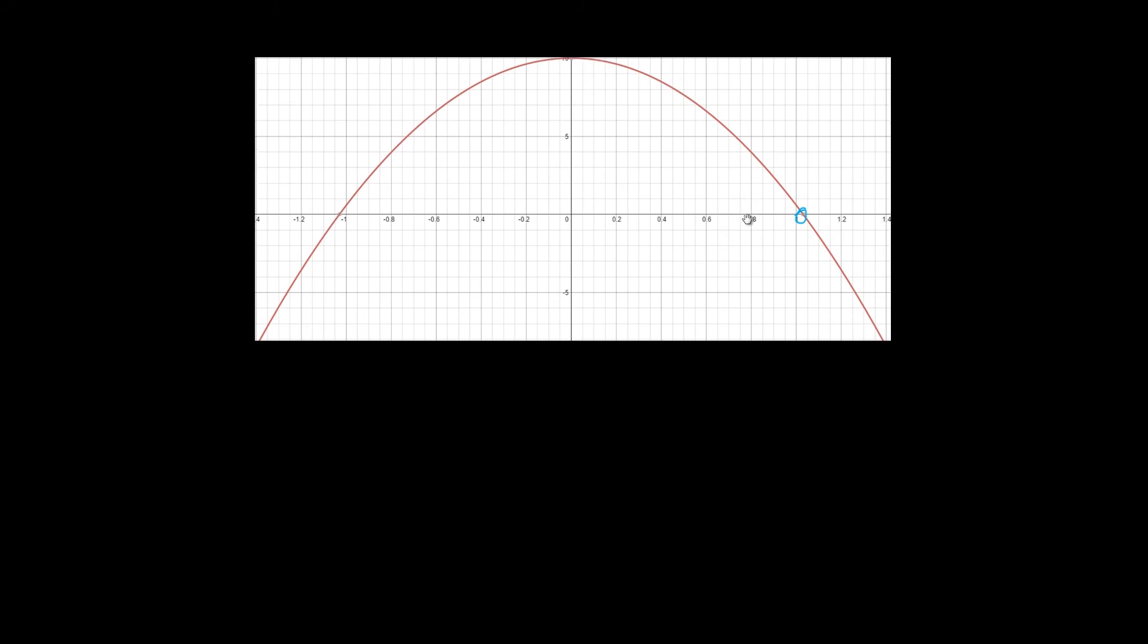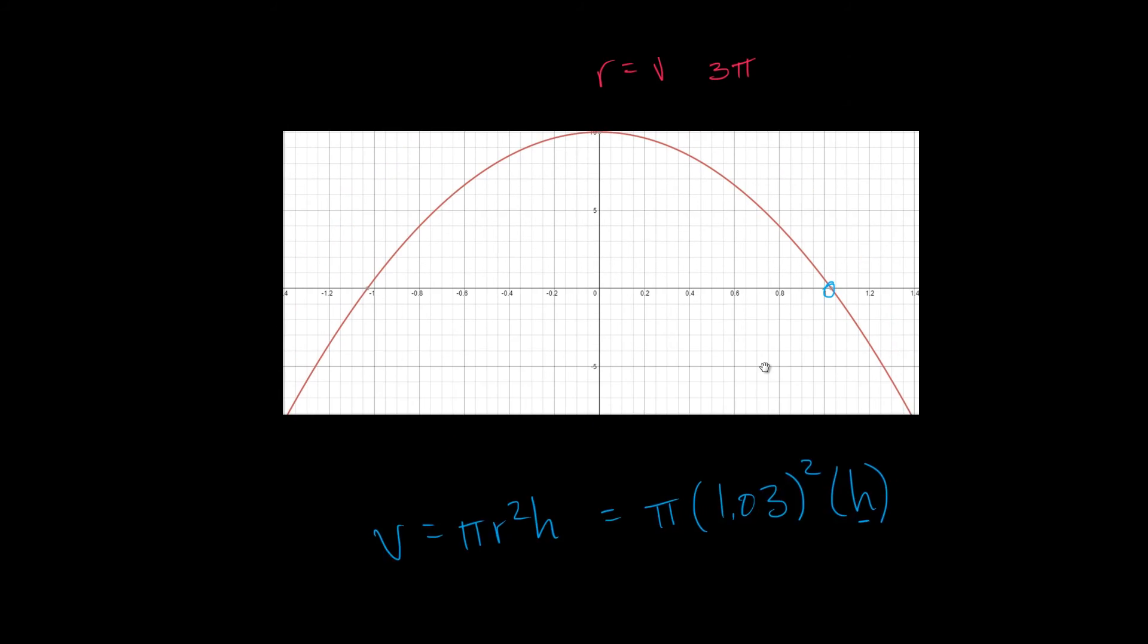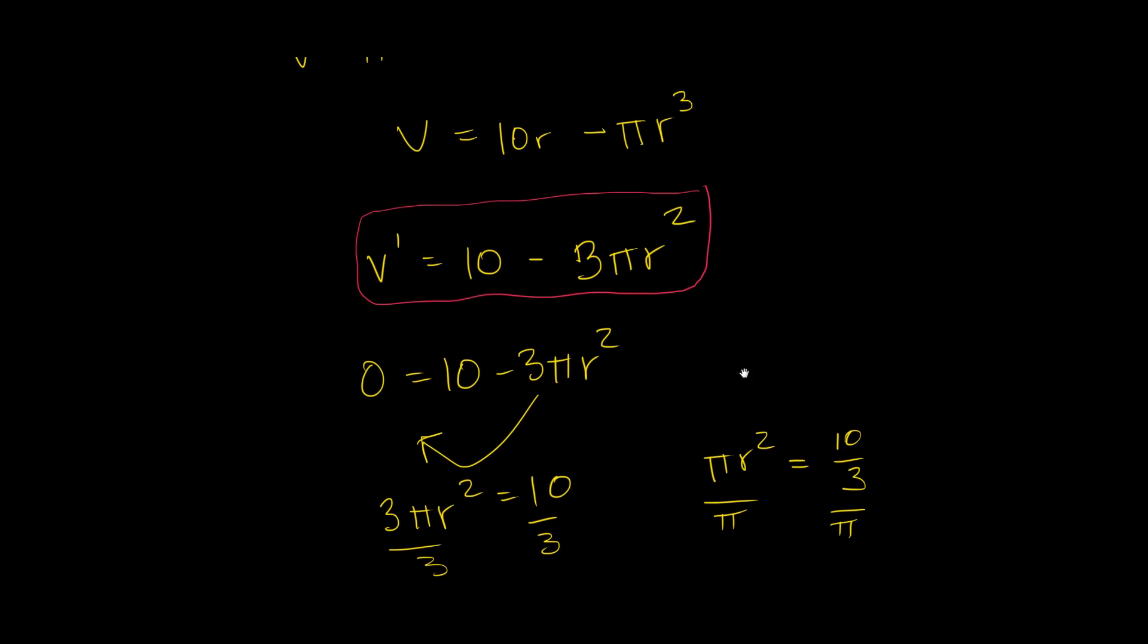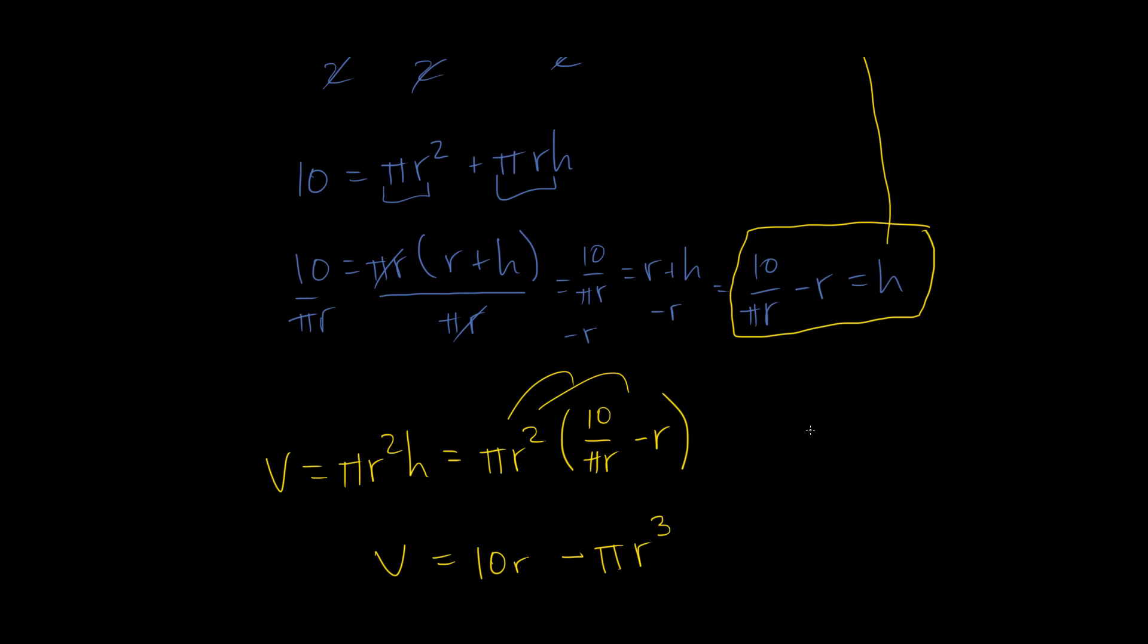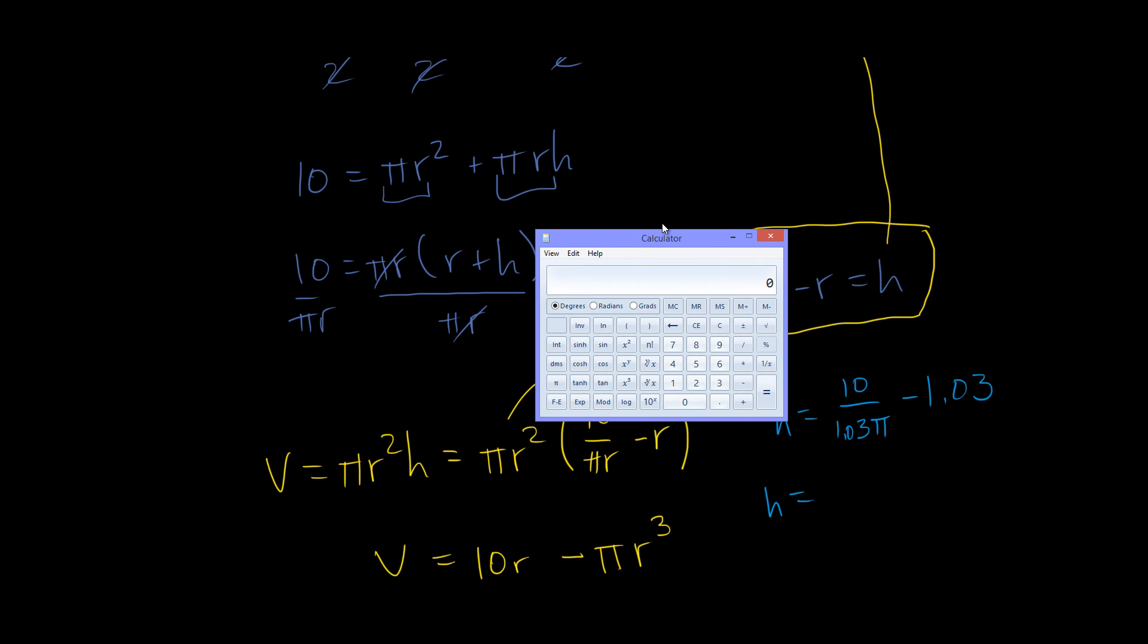Now, if we wanted to find that volume, all we have to do is plug it in. So we have volume is equal to pi r squared h, and then that's equal to pi 1.03 squared h. But we don't know our h, right? Well, to find our h, we can actually just plug it in to here. So h is equal to 10 over 1.03 pi minus 1.03. That gives us h is equal to, let's see what 1.03 is, or 1.03 times pi. 1.03 times 3.14 is, let's say, 3.23.